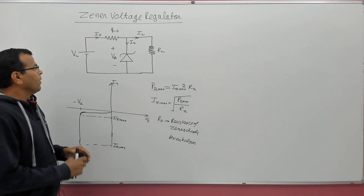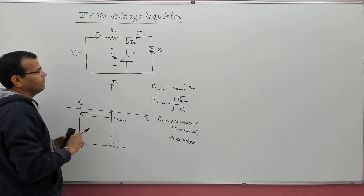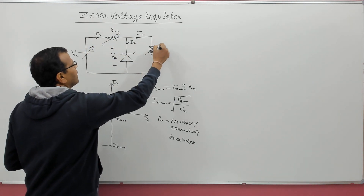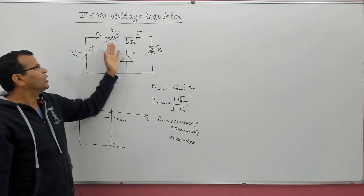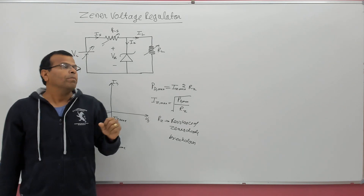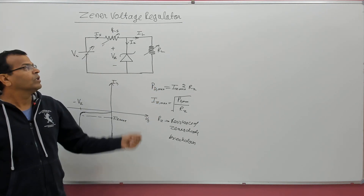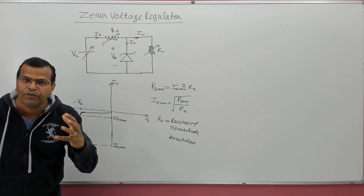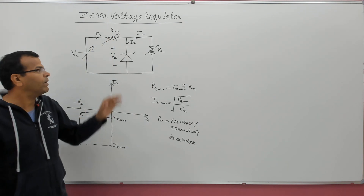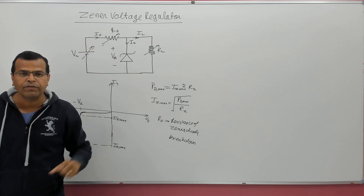Now let us see how to design the circuit. There are three possibilities: load resistance RL is variable, source resistance RS is variable, or supply voltage VS is variable. The theoretical analysis becomes complex if all elements vary together, so I will take only one parameter as variable at a time. I will take three cases: when supply voltage is variable, when RS is variable, and when RL is variable.